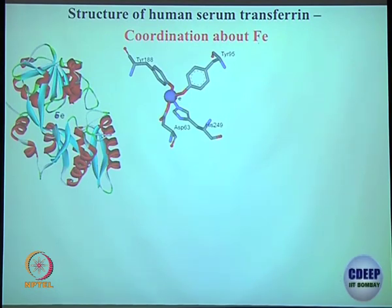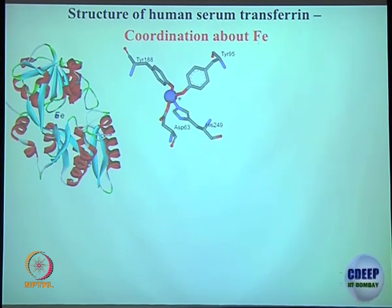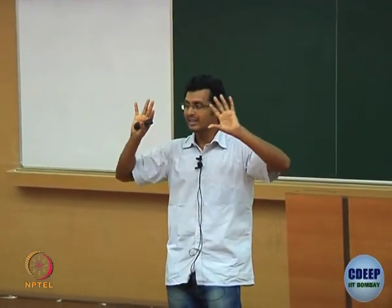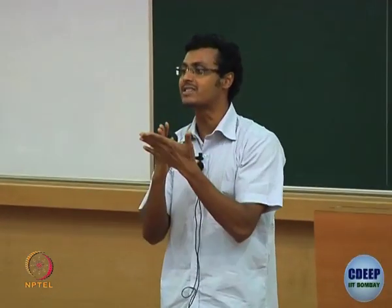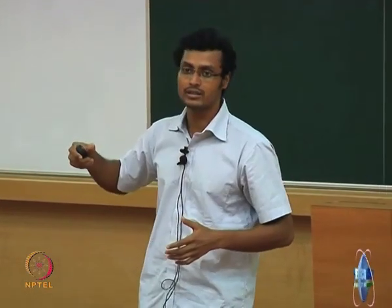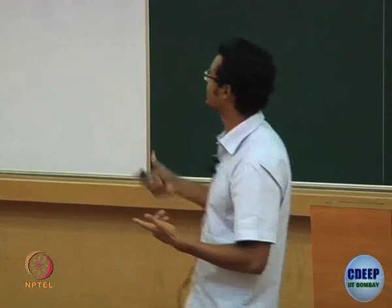This histidine unit is just imidazole — you have heard of imidazole. So phenol, imidazole, and carboxylic acid are the side chains of amino acids. All of these side chains can bind with the iron center or any other metal center.